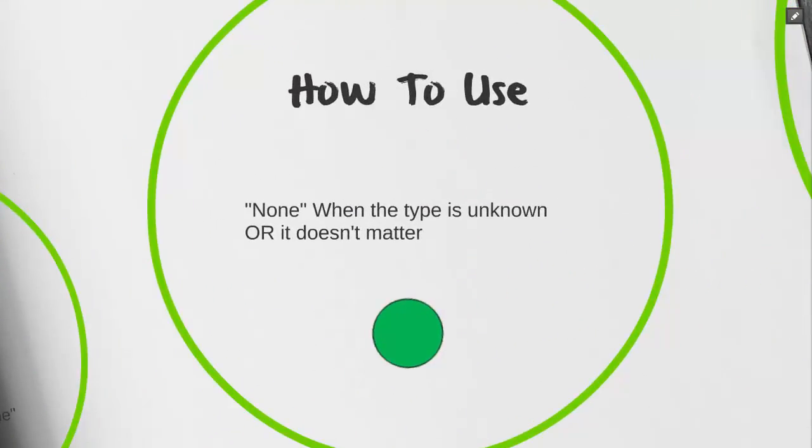The start event known as None is the simplest form. You can use it when you know the start type and it doesn't fit the other categories, or when your start event is unknown, or if your start event doesn't matter. The start event does not need to be a green circle. It could also be a white circle. The color doesn't matter.